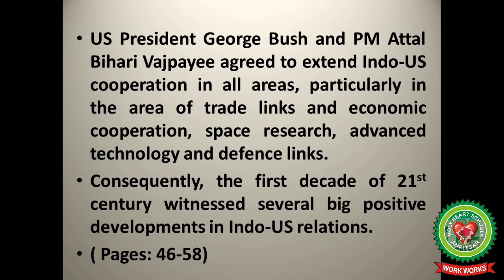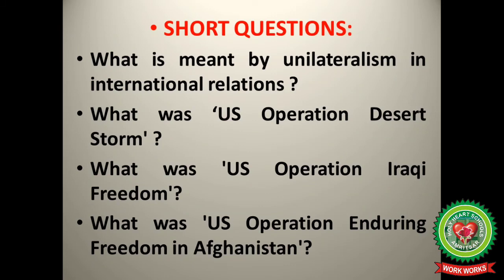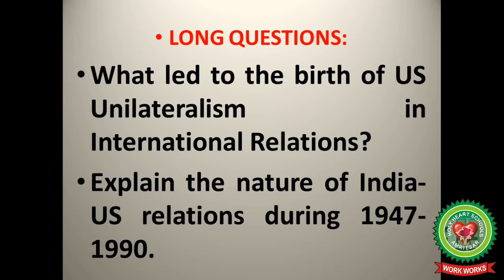This finishes the discussion of today's topic, covered on pages 46 to 58. The short questions to prepare are: What is meant by unilateralism in international relations? What was US Operation Desert Storm? What was US Operation Iraqi Freedom? What was US Operation Enduring Freedom in Afghanistan? The long questions are: What led to the birth of US unilateralism in international relations? Explain the nature of India-US relations during 1947 to 1990. You will prepare these questions, do the snap homework, and watch the video again.